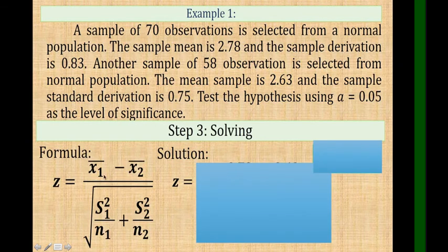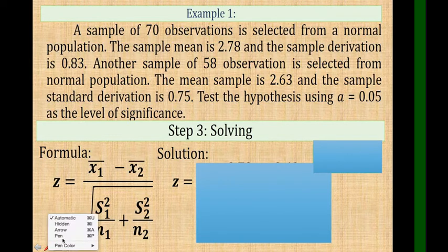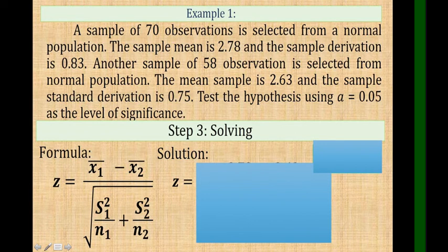Using the formula x̄1 minus x̄2 over the square root of s1² over n1 plus s2² over n2, let's first determine the given before we solve. For x̄1, the mean of the first observation of 70, the mean is 2.78 and the sample deviation is 0.83. The n is 70.